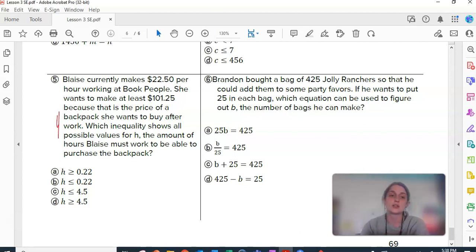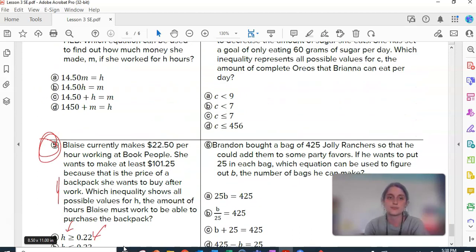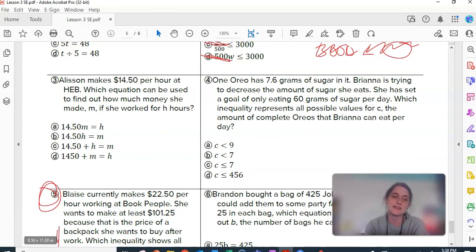And in this one, you are going to have to actually do the math. Because you can see that H, our variable, is isolated alone. There are no more operation symbols on the right-hand side. So, you're going to have to write your inequality and then solve it. Versus most of the other ones where you just have to write the inequality or the equation. Okay, good luck. I will see you on Monday.